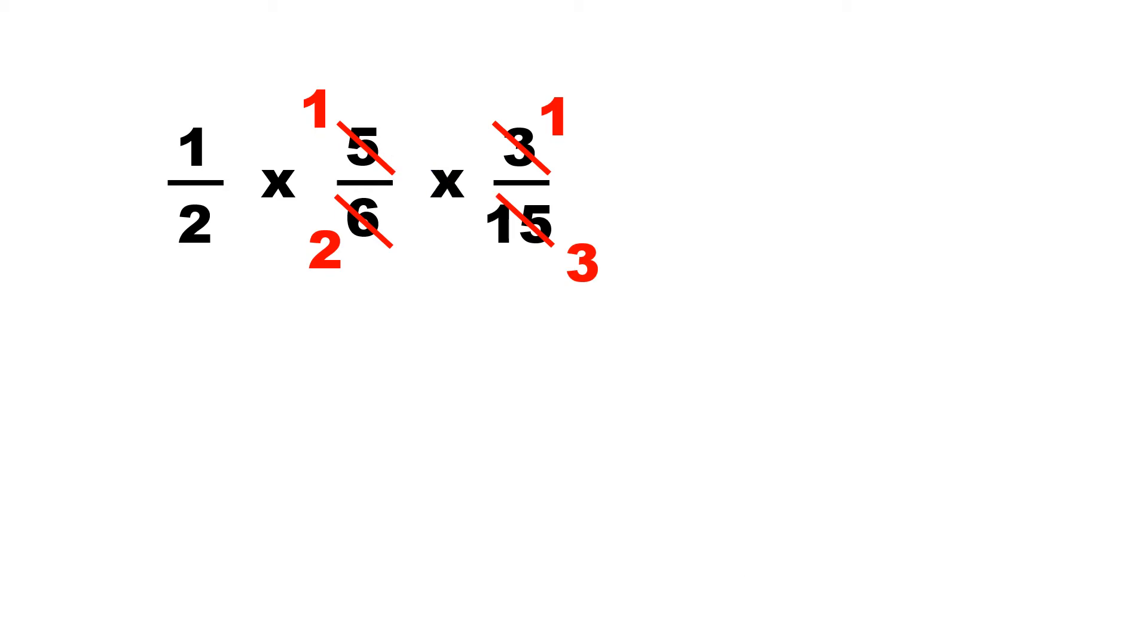And now, we multiply across. 1 times 1, not 5, but 1, will be 1 times 1 again. The answer is 1. Let's do the bottom. 2 times 2 is 4 times 3 equals 12. 1/12 is the answer.